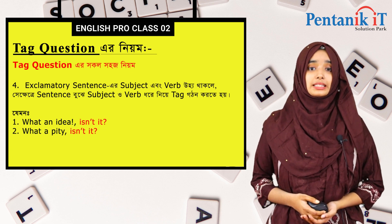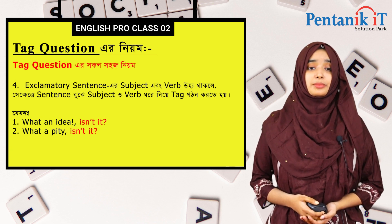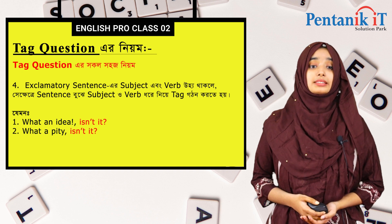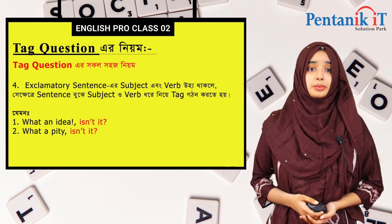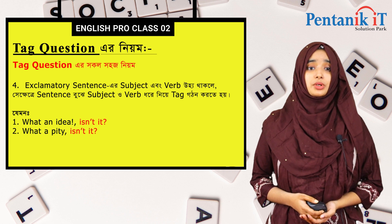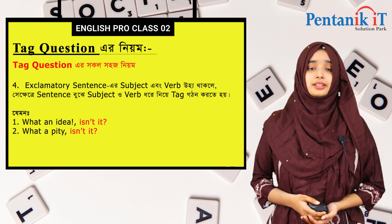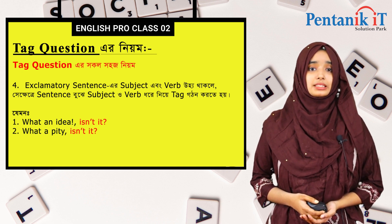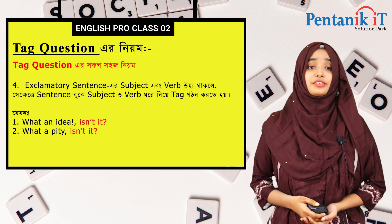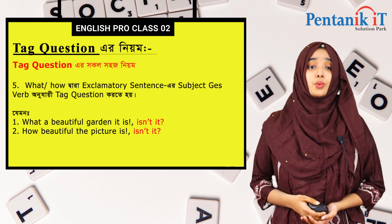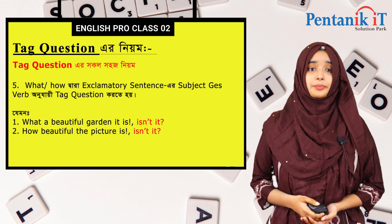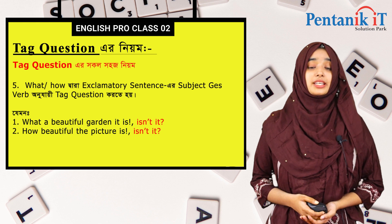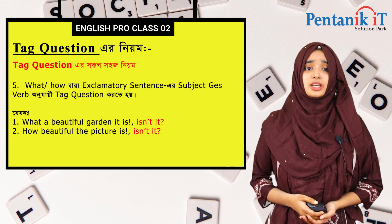Fourth হচ্ছে exclamatory sentences। Subject এবং verb উভয় থাকলে সেক্ষেত্রে sentence থেকে subject এবং verb ধরে নিয়ে tag গঠন করতে হবে। যেমন: 'What an idea, isn't it?' 'What a pity, isn't it?' তারপর fixed rule হলো 'what' দ্বারা exclamatory sentences-এ subject এবং verb না থাকলে tag question করতে হয়। 'What a beautiful garden it is, isn't it?'